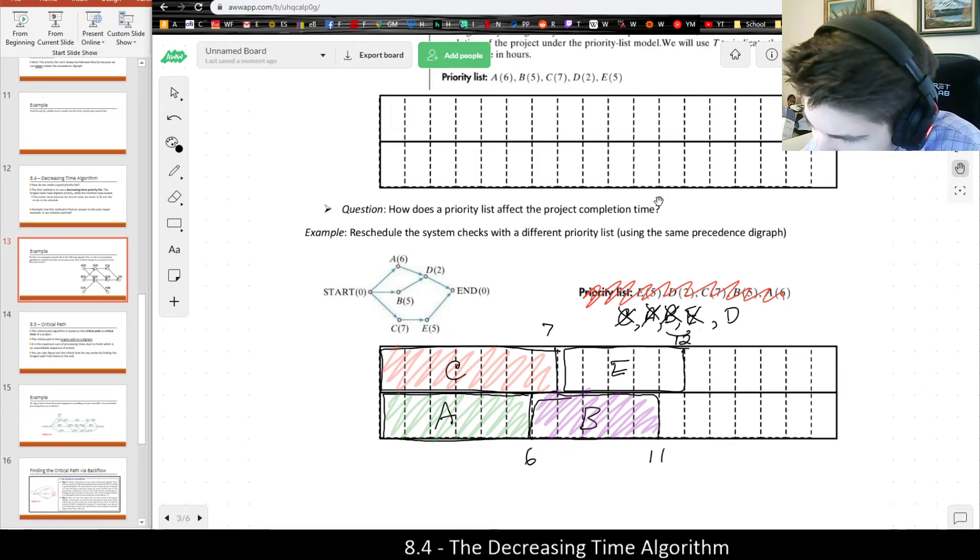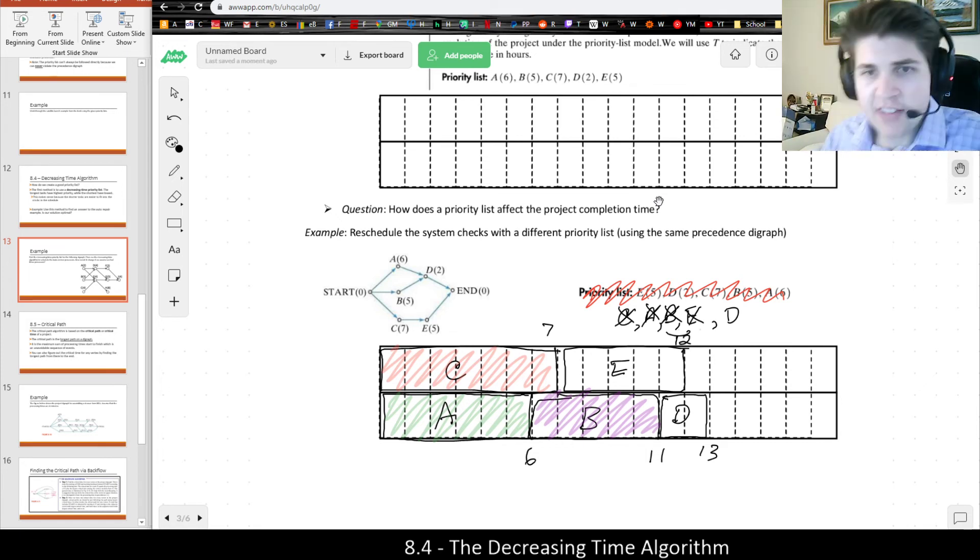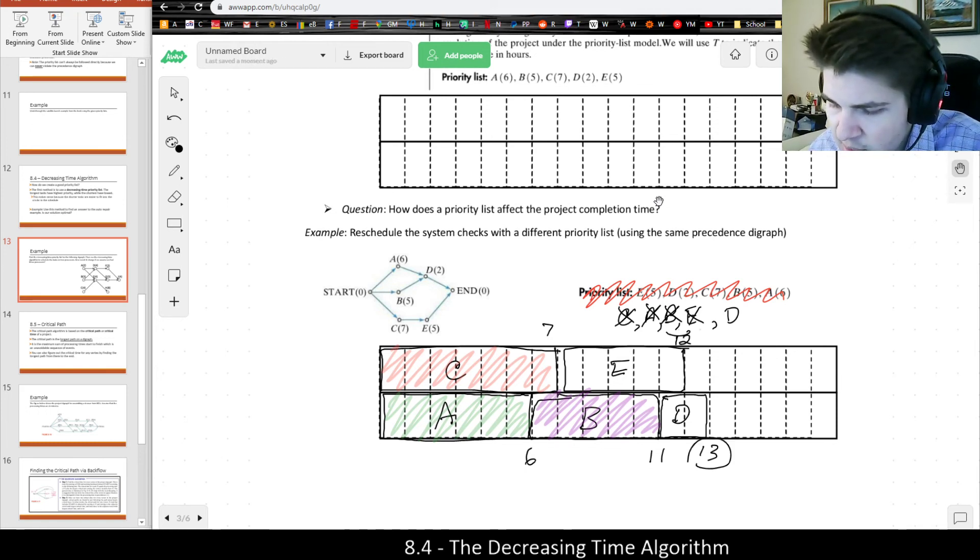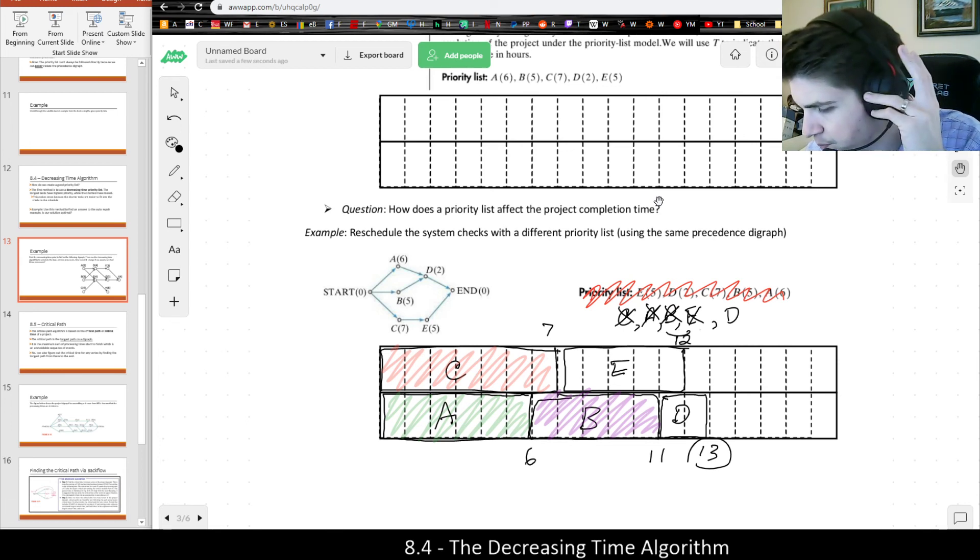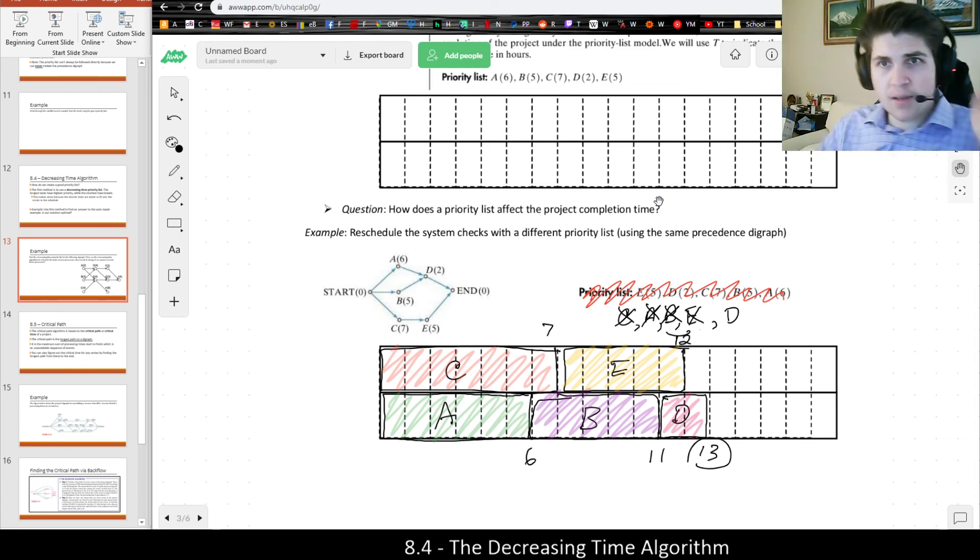And then meanwhile, processor two could then work on D, which is two, which would become ready because A and B were both completed. And notice that I actually get the same time as we got when we did it last time, which we concluded was optimal then. But usually using a decreasing time priority list is a very fast way of coming up with a good order rather than just randomly picking an order alphabetically or reverse alphabetically as we did in those prior examples.